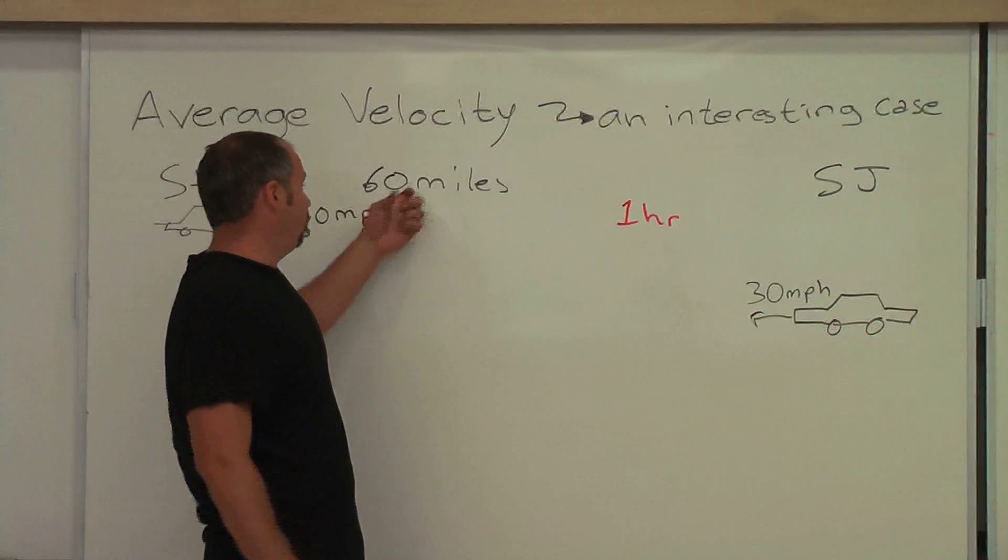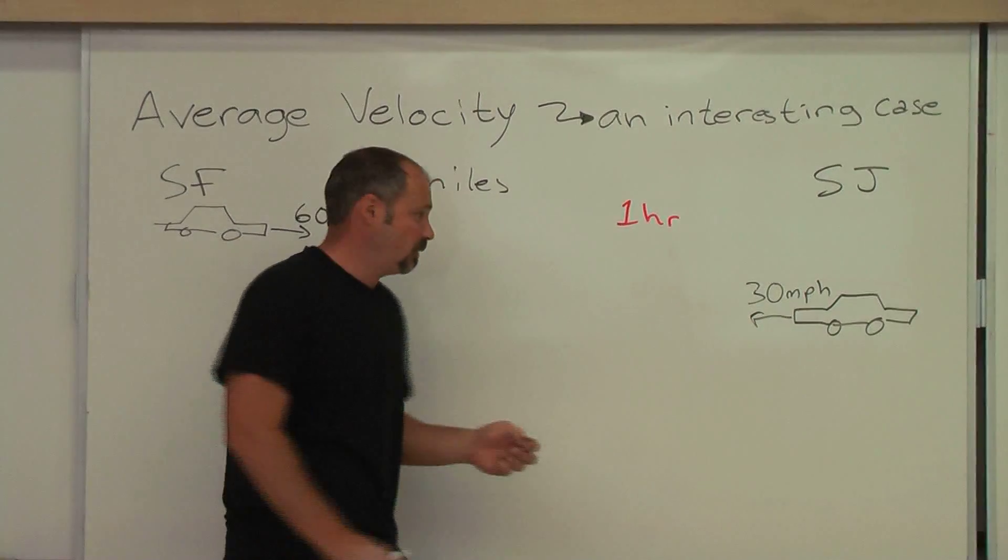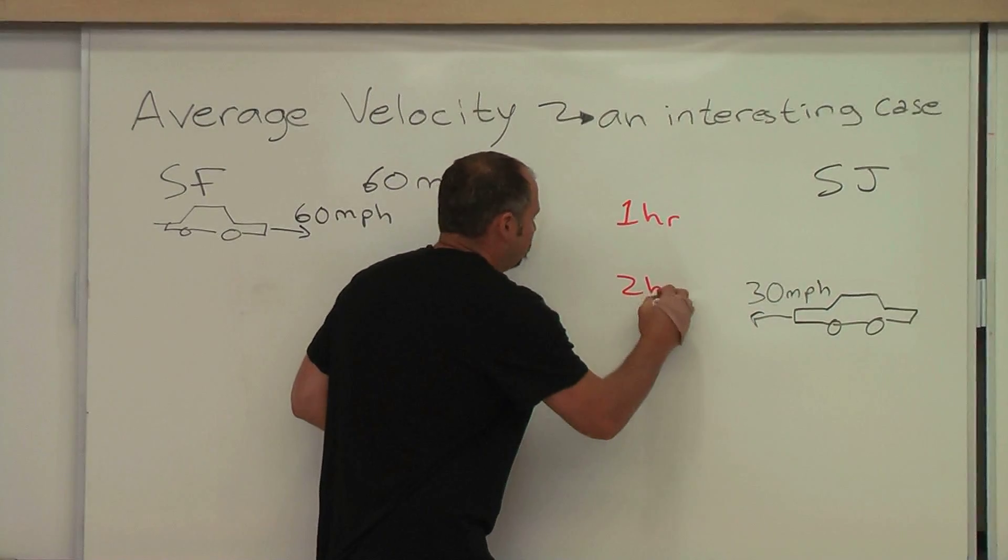The time coming back, however, well, 60 miles at 30 miles per hour, the time coming back is two hours.